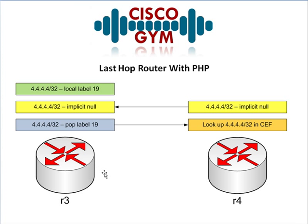R3 has already seen this prefix in its local routing table and assigned it local label 19. It's going to build the LFIB, and it says: I don't have an outgoing or remote label assigned for this — I have something called an implicit null. Basically what implicit null means is: when R3 gets something that says implicit null, it just pops the label, no questions asked. So when it goes to the LFIB and receives a packet with label 19, it's going to pop that label and send it on its way to R4.